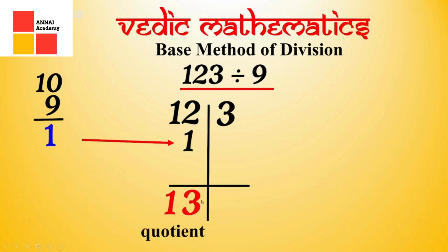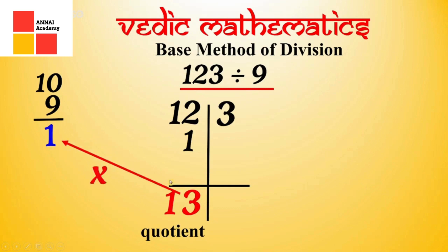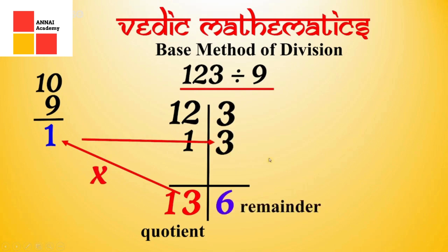But to get the remainder, you have to multiply 3 by the given complement. So 3 into 1 is 3. Write 3 below 3. Now we will do 3 plus 3, which is 6. This is your remainder. 13 is the quotient and 6 is the remainder. So you saw how you solved this division sum according to Vedic maths without knowing the table of 9.